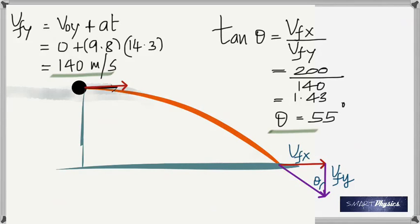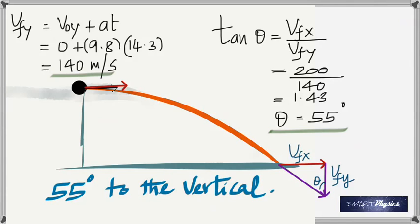So the bomb hits the target at an angle of 55 degrees to the vertical. Since we know this is 90 degrees, this is going to be 35 degrees to the horizontal.